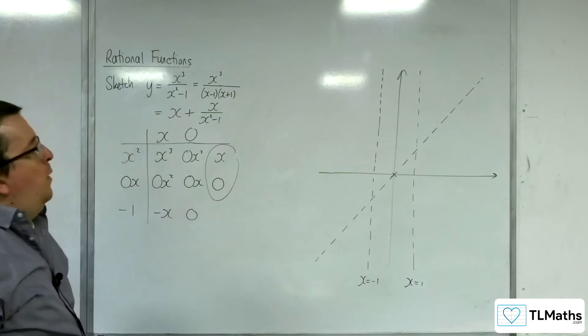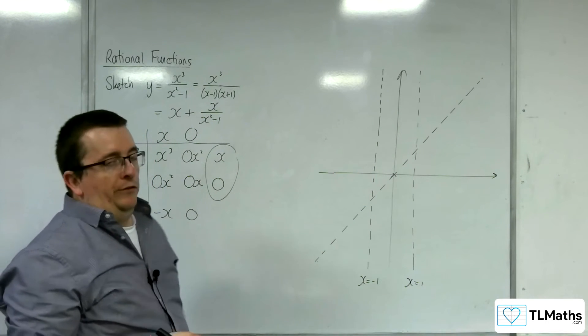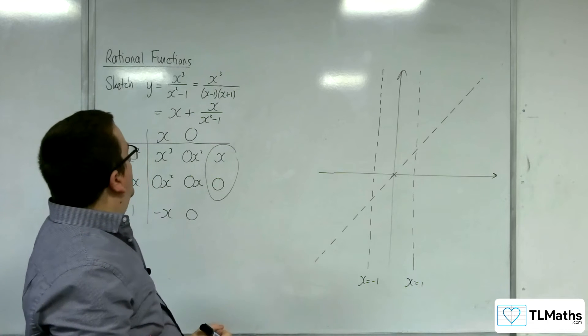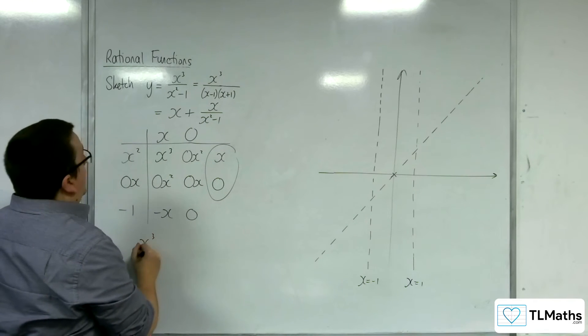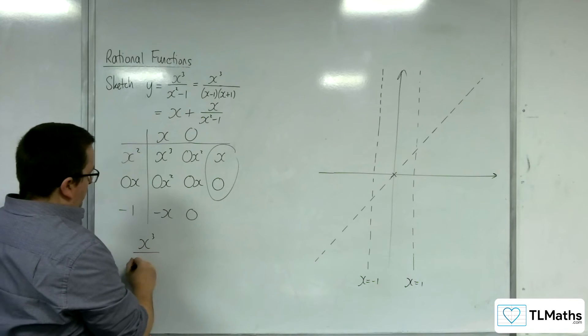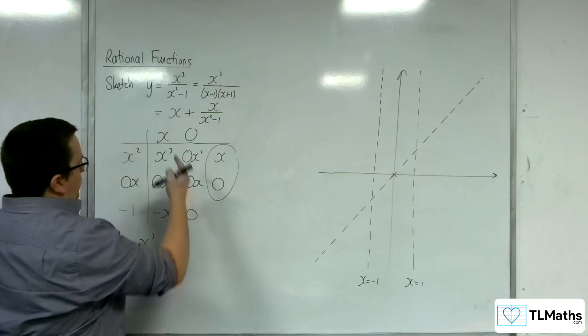Next thing, I want to check whether my curve crosses the oblique asymptote. So I'm going to set x³/(x² - 1) equal to x.